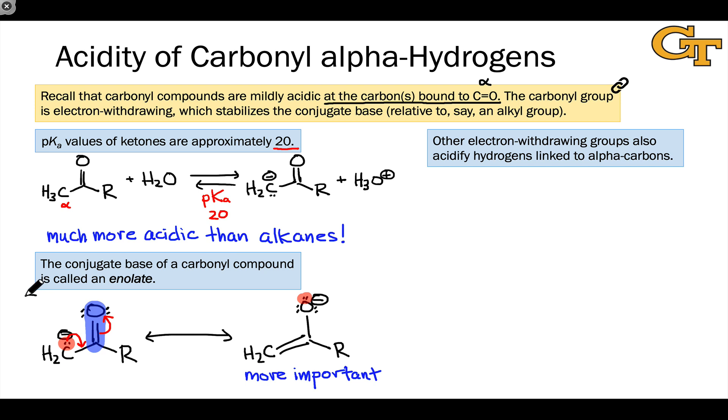This resonance stabilized conjugate base of a carbonyl compound is called an enolate. 'En' because of the carbon-carbon double bond, and 'olate' because of the negative charge on oxygen in this most important resonance form.